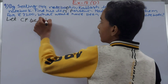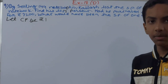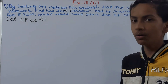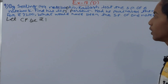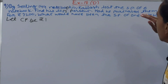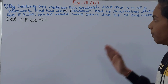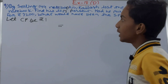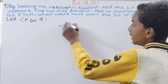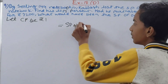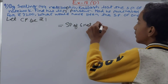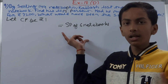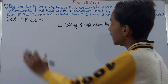Now we can frame an equation with the help of this question. It says that by selling 144 notebooks, Kailash lost the selling price of 6 notebooks. So on the right-hand side of the equation we will have the SP of 6 notebooks, which is the loss.